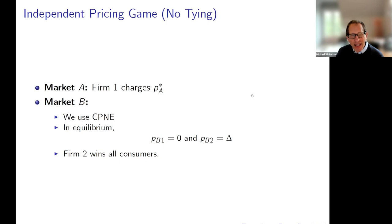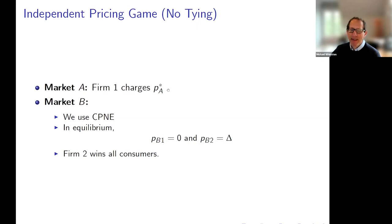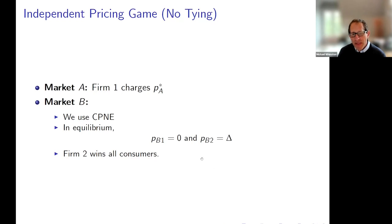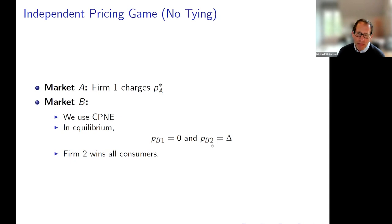In the independent pricing game, just as before there's a monopoly price P_A* that need not involve full coverage — it could have just some consumers excluded in market A. Applying coalition-proofness, the equilibrium in market B with independent pricing is that firm two wins and charges its quality differential delta.